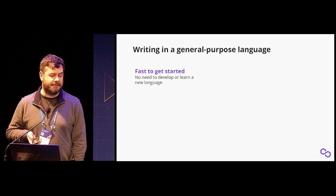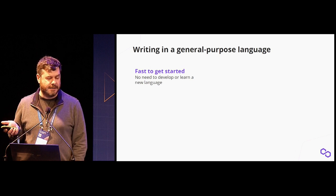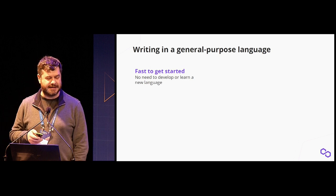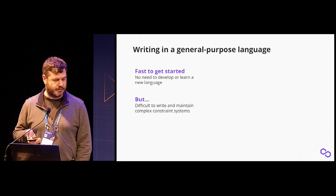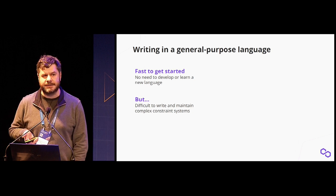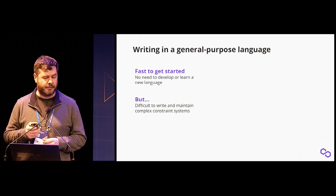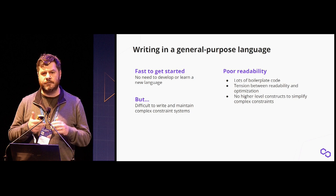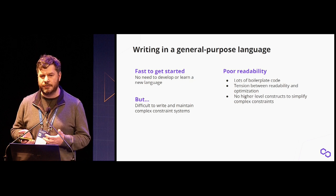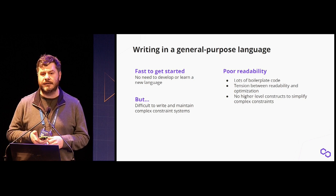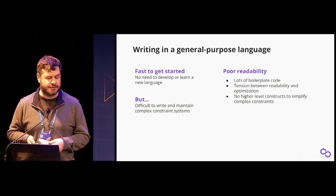Why do you want a DSL versus a general-purpose language? The advantage of a general-purpose language is you get started very fast—you don't need to learn a new language and you don't need to develop one. But the downside is it becomes very difficult to maintain the constraint system, especially if it's complex. There's poor readability: you need a bunch of boilerplate code, and there's always a tension between readability and optimization. General-purpose languages also don't provide good abstractions for describing complex constraints.